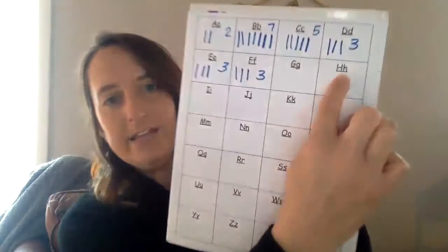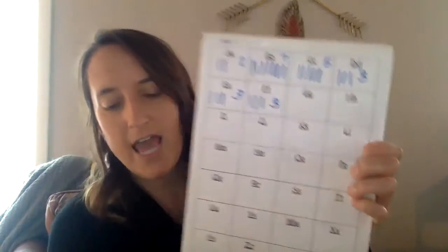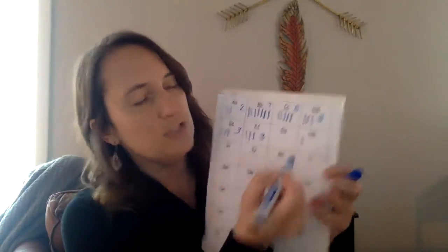Here is a hat. Hat. At the beginning I hear H, H — hat. What letter makes that sound? H, H. Letter H. H says H, H. So we're gonna make a mark by the H. We found an H word.